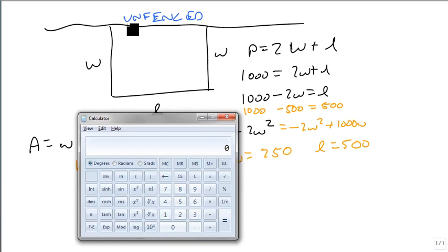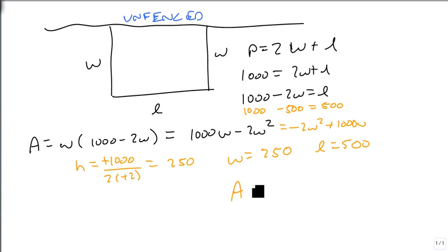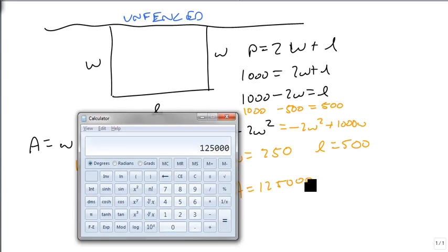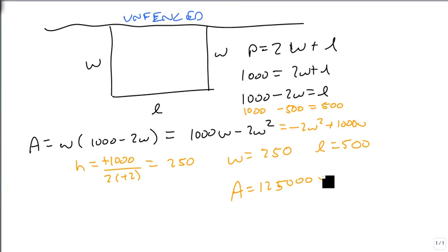And of course, I'm going to use the same thing as last time. We're just going to multiply the width by the length. And we get that our area is 125,000 square yards. So we were able to double our area because we only fenced 3 sides.